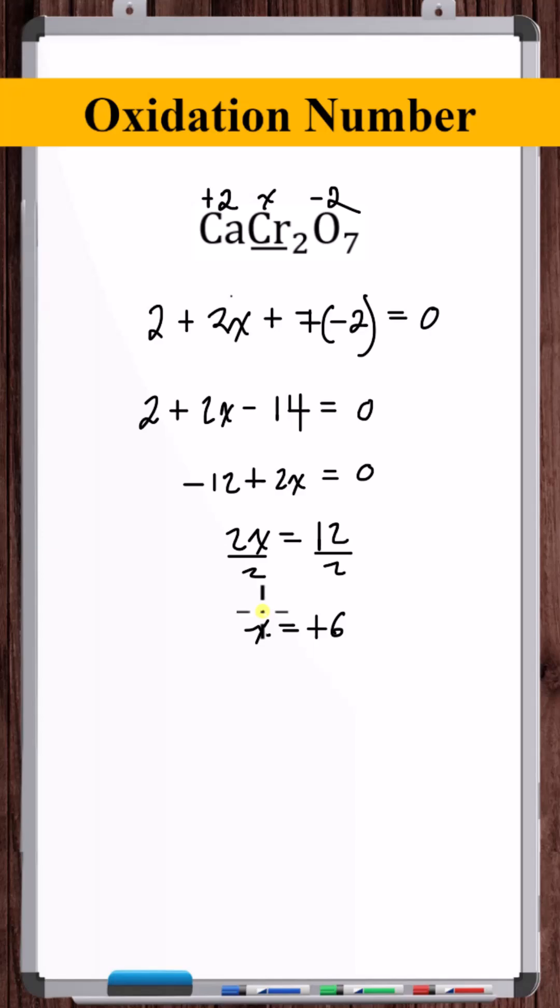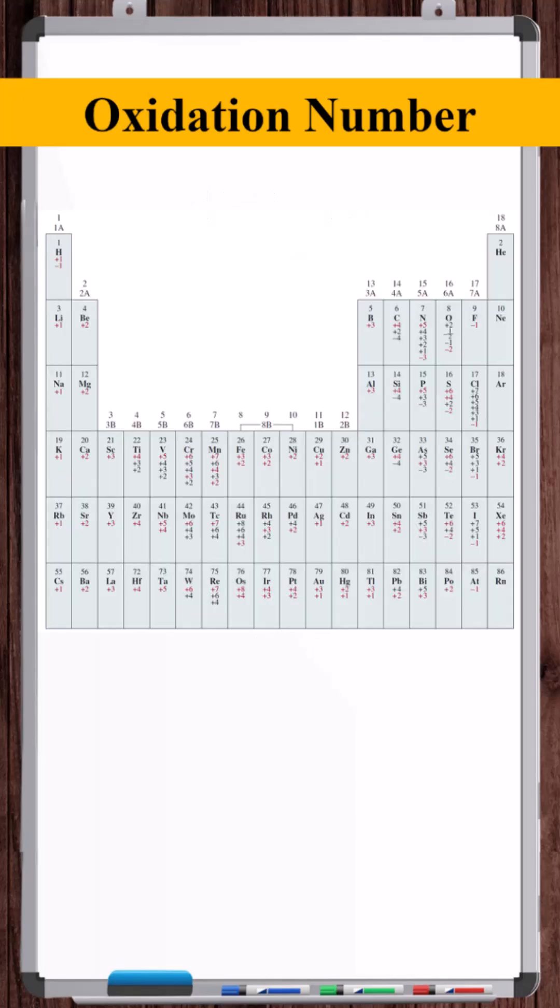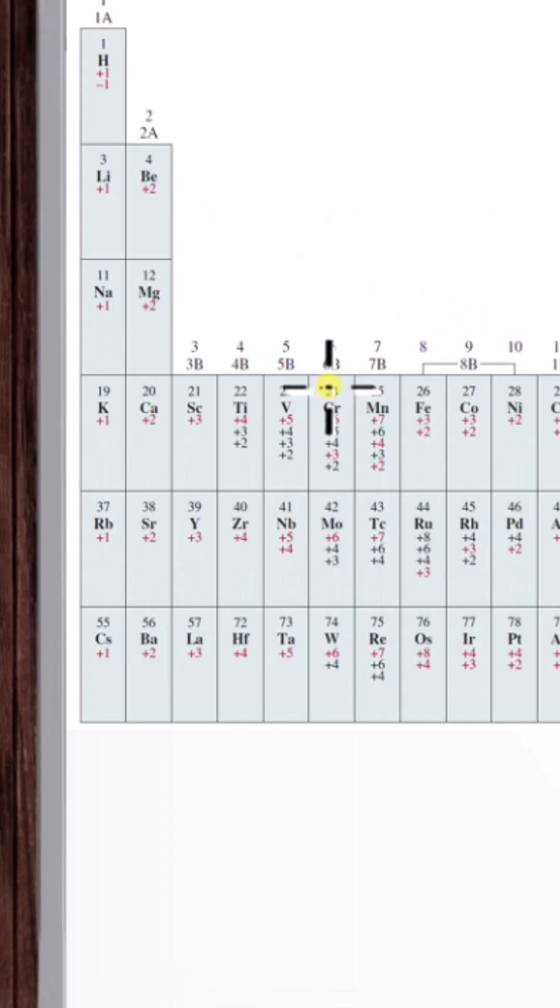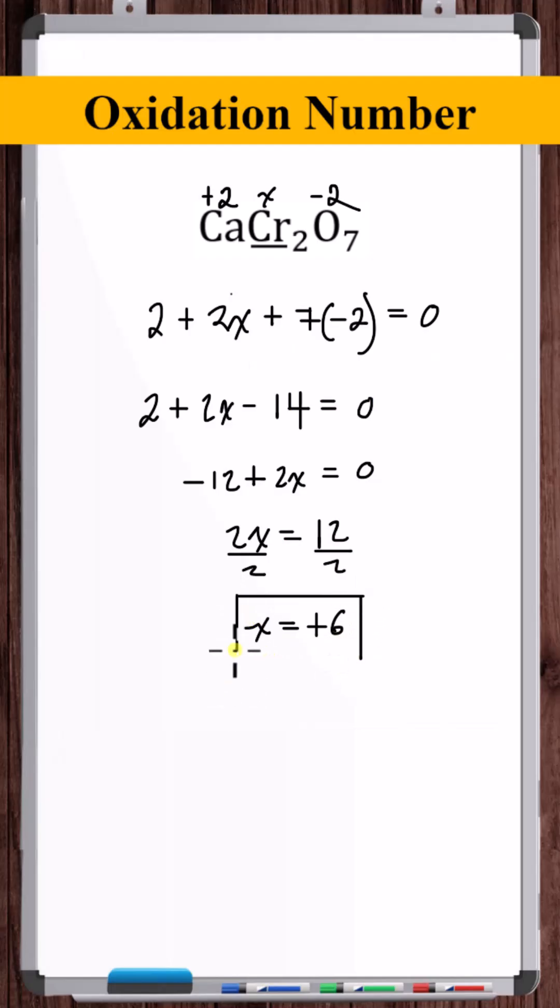Solving for X, plus six. Looking at the oxidation number chart, plus six is listed as an oxidation number for chromium. In fact, it's in red, so it's a common oxidation number. So, plus six is the oxidation number on the chromium.